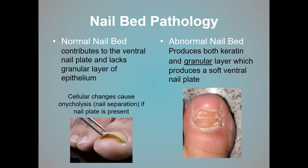The nail bed is a very important structure, and its relationship to the nail plate is equally important. A normal nail bed has ridges that allow the nail plate to stay attached, and it lacks the granular layer of the epithelium that other skin has. However, an abnormal nail bed produces that granular layer and produces keratin, often making it look like there is a soft nail sitting on top of the nail bed due to this abnormal granulation and keratinization. When this occurs, the nail plate will often separate from the nail bed — a process called onycholysis.